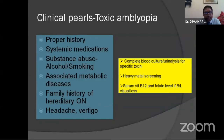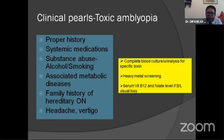For the clinical approach to toxic amblyopia, proper history is very, very important. Systemic medication and substance abuse — alcohol and smoking — can add to the problem. Associated metabolic disease, such as kidney disease, can accelerate toxic optic neuropathy. Family history of hereditary optic neuropathy is very important, as it can worsen the condition rapidly. History of headache and vertebral issues is also important. Investigations often missed include blood culture for toxins, urine analysis for specific toxins and heavy metal screening, serum vitamins if bilateral involvement is noted.